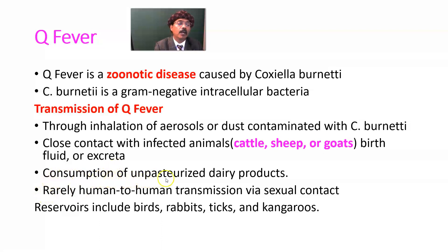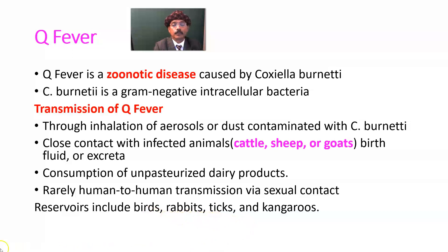Consumption of unpasteurized dairy products such as milk is another route of transmission. Rarely, human-to-human transmission can occur via sexual contact. Reservoirs include birds, rabbits, ticks, and kangaroos. Consumption of unpasteurized dairy products or milk is an important cause of Q-fever, and consumption of infected animal meat may also be a cause.